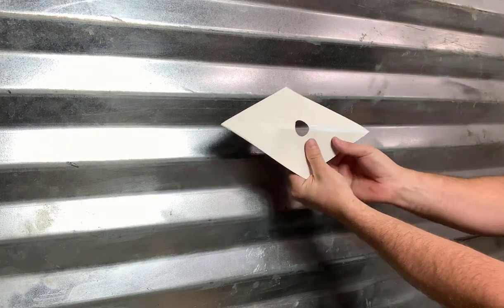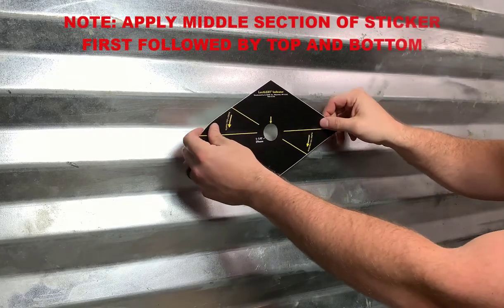Note, on corrugated bin walls, make sure the hole of the sticker sits in the in-curve of the corrugation.